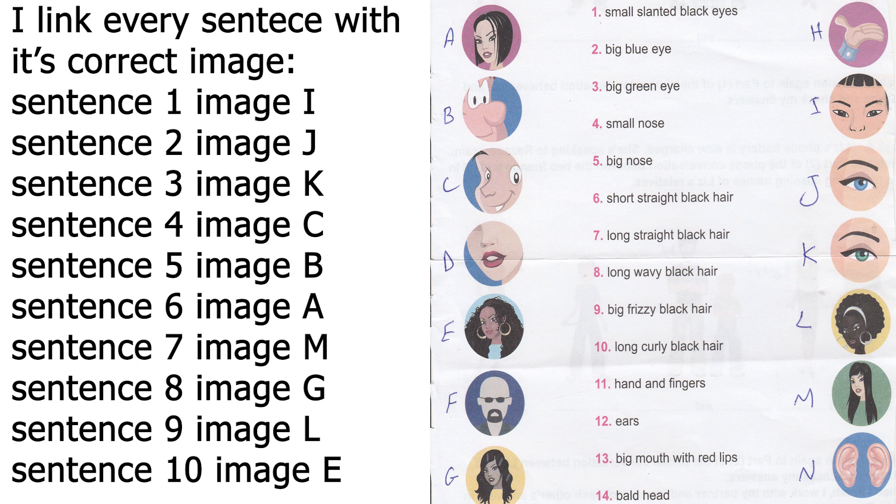This task says that we must put every sentence with its correct picture. Picture 1: small slanted black eyes. Let's look for the small eyes. We found them. Are they slanted? Yes, they are. And are they black eyes? Correct. Small slanted black eyes, which is sentence number 1, goes to image I.